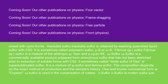Insoluble sulfur is obtained by washing quenched liquid sulfur with CS2. It is sometimes called polymeric sulfur, mu-S, or omega-S. Fibrous phi-sulfur is a mixture of the allotropic psi-form and gamma cyclo-S8. Omega-sulfur is a commercially available product prepared from amorphous sulfur that has not been stretched prior to extraction of soluble forms with CS2. It is sometimes called white sulfur, DOS, or super-sublimated sulfur. It is a mixture of psi-sulfur and lamina-sulfur; the composition depends on the exact method of production and the sample's history. One well-known commercial form is Crystex. Omega-sulfur is used in the vulcanization of rubber.